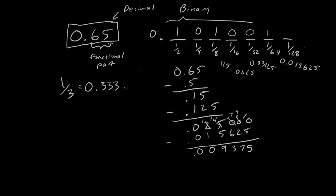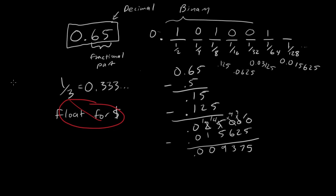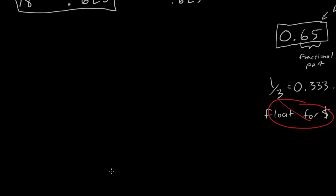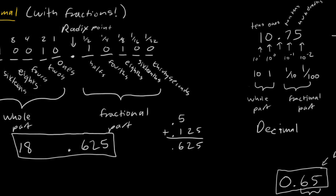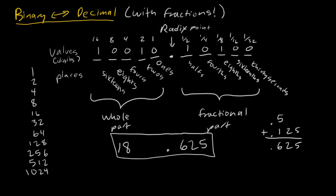So this is another reason why, if you're dealing with currency, you would never want to use a float — float for currency is a big no-no. Don't do that. In any event, that's what I wanted to get out of this lesson today about doing binary-to-decimal conversions with fractions, so there you go.